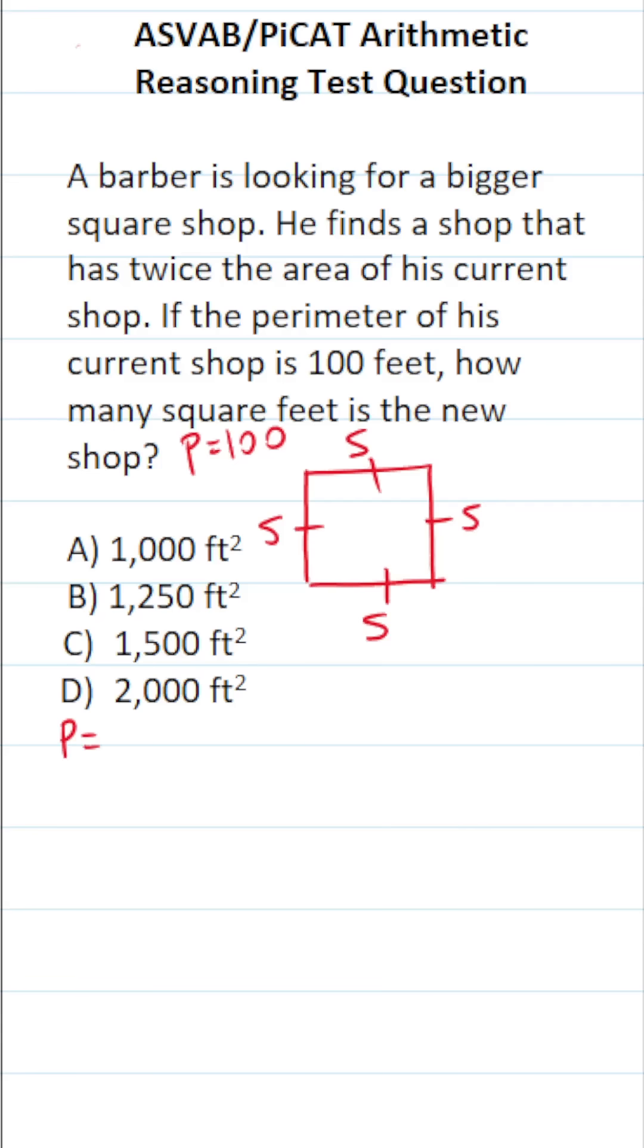How do you find the perimeter of a square? You simply add up all of its sides, so that's going to be S plus S plus S plus S, or 4S. How do you find the area of a square? You're not given a reference sheet on the ASVAB or PICAT, so you have to commit that formula to memory. It's going to be its side length squared.